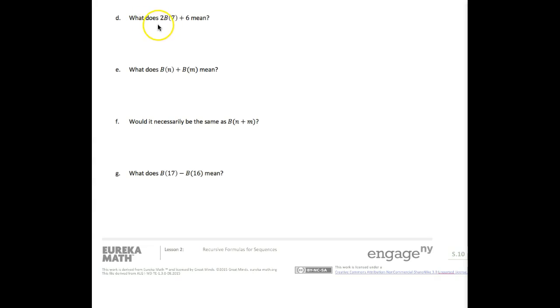What does 2b(7) + 6 mean? Well, it means double the seventh term and add 6.